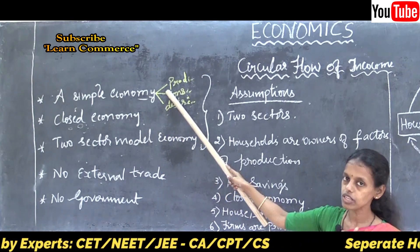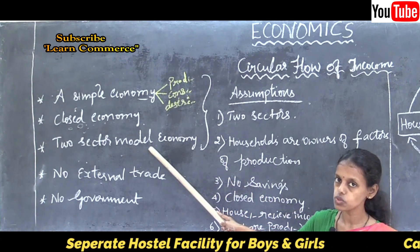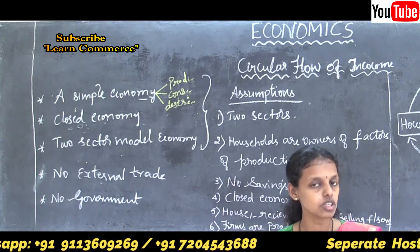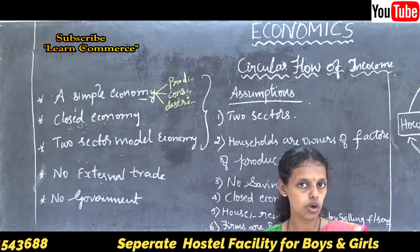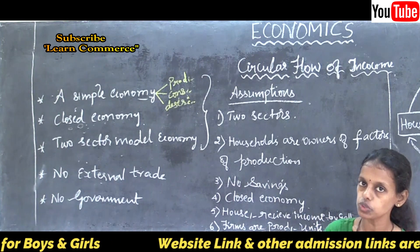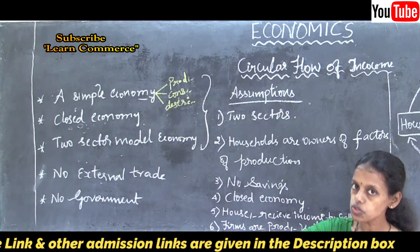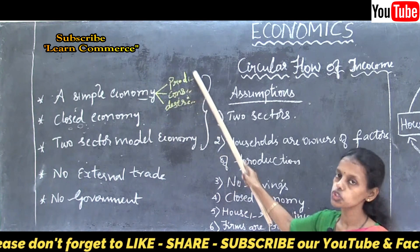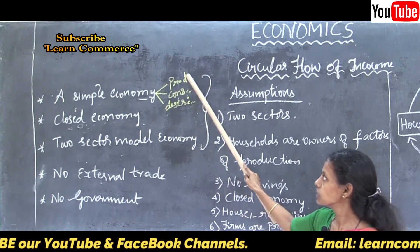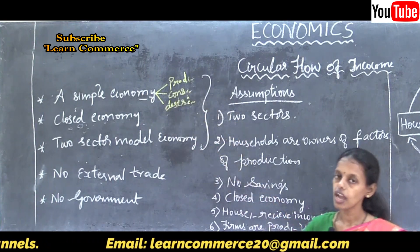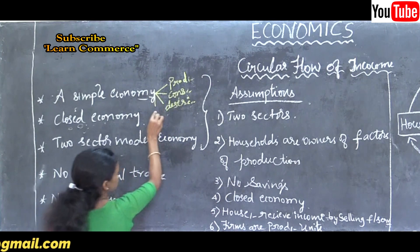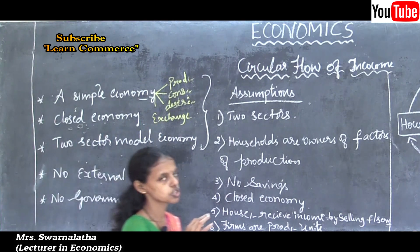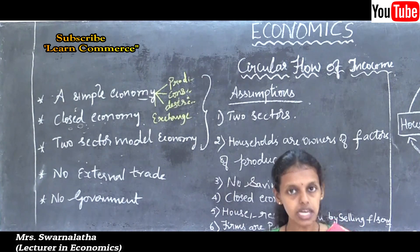In a simple economy there are only two sectors: households and firms. Households supply the raw materials and firms use those raw materials to produce finished products. The firm then supplies those finished products to the households. Through production, consumption, distribution and exchange — these four economic activities — income is circulating in the economy. That is the circular flow of income in a simple economy.